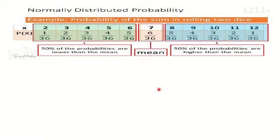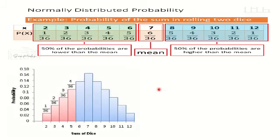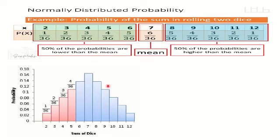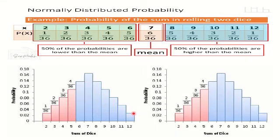If we graph this normally distributed probability — the probability of the sum when rolling two dice — the sum of 7 is the highest point. The sum of 2 (1/36) has the same probability as the sum of 12 (1/36), and the sum of 5 (4/36) has the same probability as the sum of 9 (4/36). So the left side and right side of the distribution are equal — it looks like a pyramid, and when smoothed into a normal curve, it becomes a bell-shaped curve.